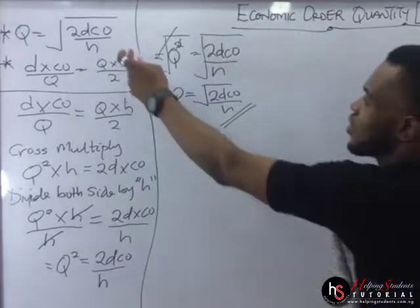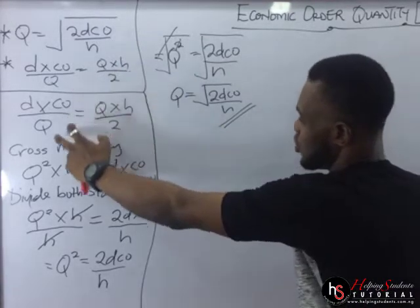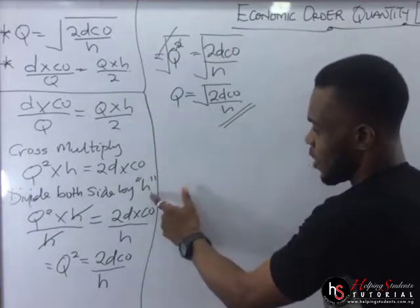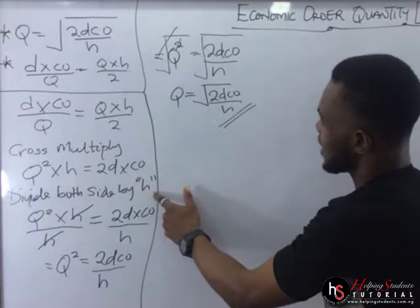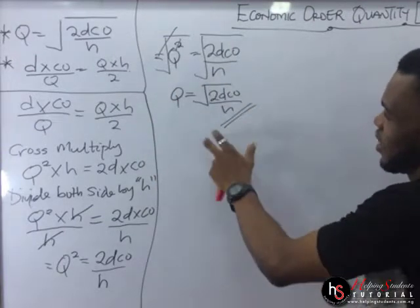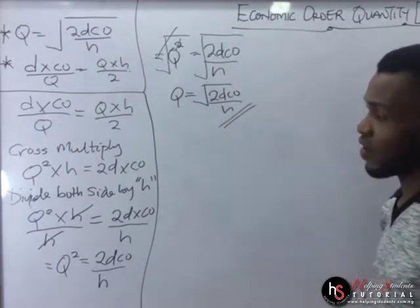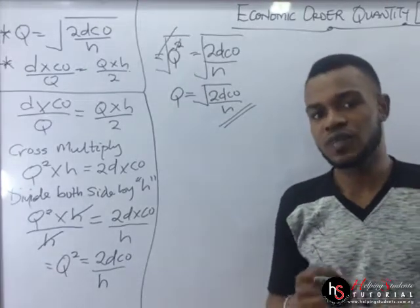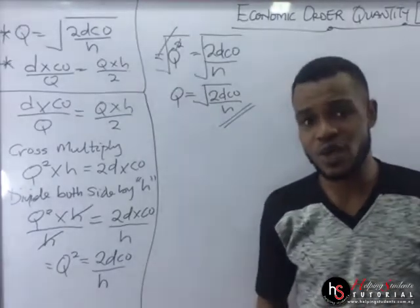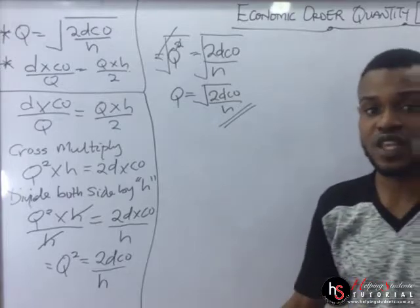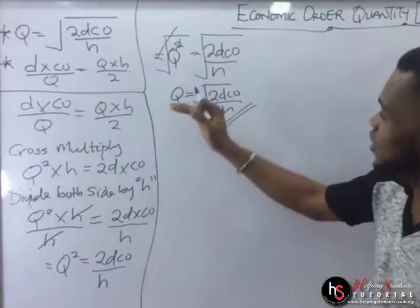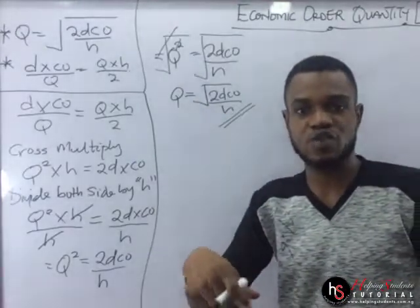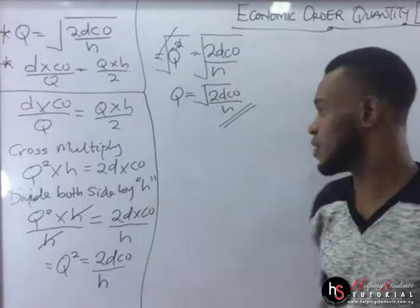How did we derive this? We followed through these steps: the first thing was to cross-multiply, then we divided both sides by H, then we took the square root of both sides, and we arrived at our final answer. So follow the steps. If you're asked in the examination to derive the EOQ, this is what you'll do. Remember, the values will be given, so you'll work with the values being given.